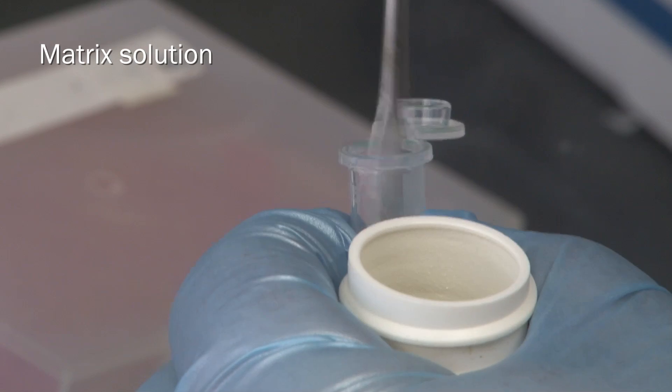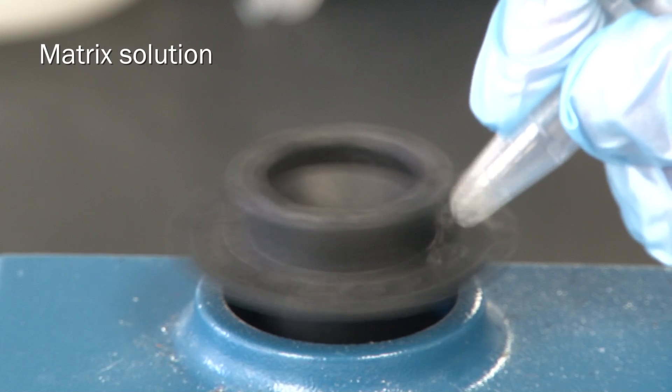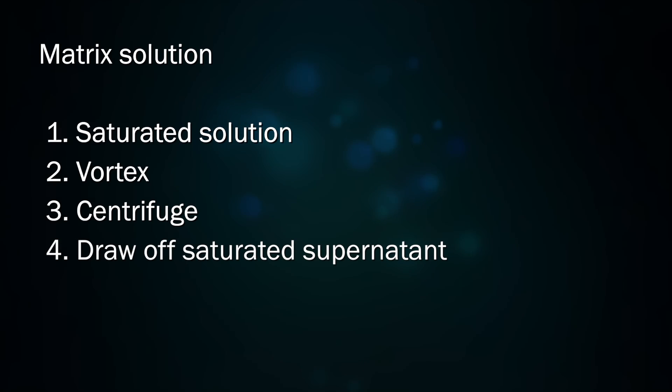Prepare a saturated solution of the matrix in an Eppendorf tube and vortex it to ensure it is fully mixed. Use a centrifuge to compact the undissolved solid and draw off the saturated supernatant into a new Eppendorf tube. Label this your matrix solution.